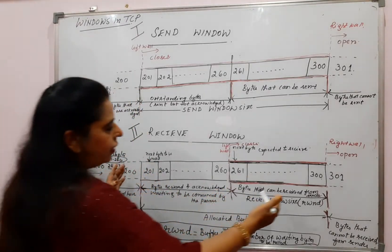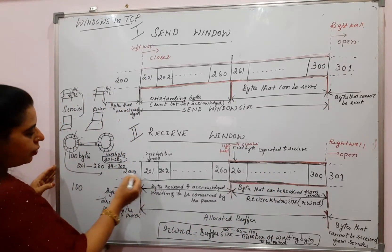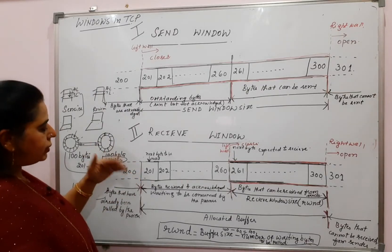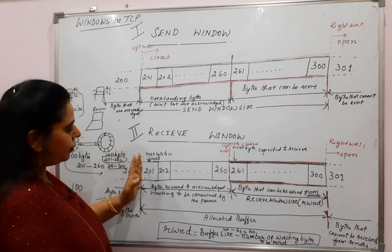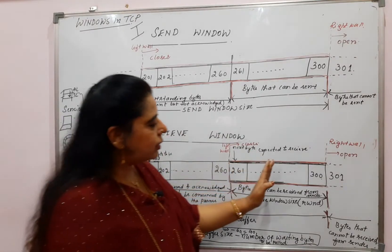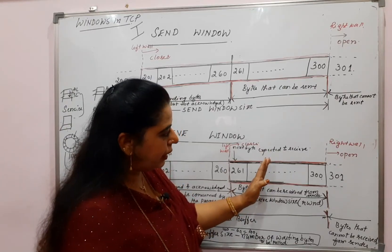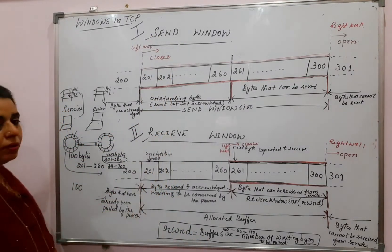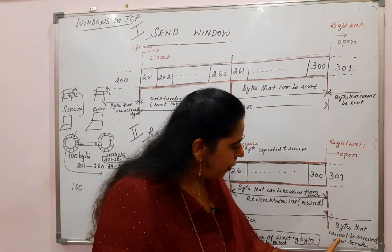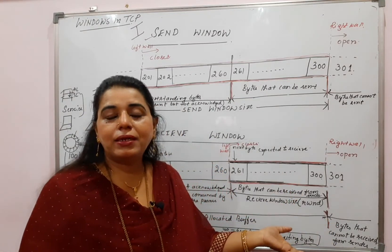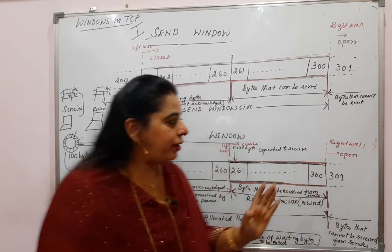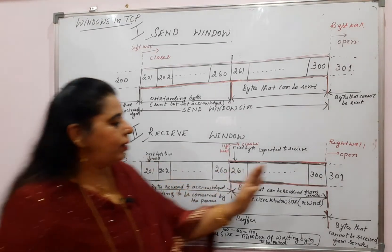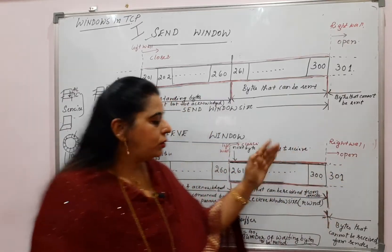What is before byte 201? You can see that bytes 199 and 200 have already been pulled by the process, so the application layer has already pulled those bytes — no need to store them in the buffer, and they go away from the buffer. From byte 301 onwards, those are bytes that cannot be received from the sender because the capacity is only 40 bytes. So the receiver cannot receive byte 301 — its capacity is only 40 bytes.